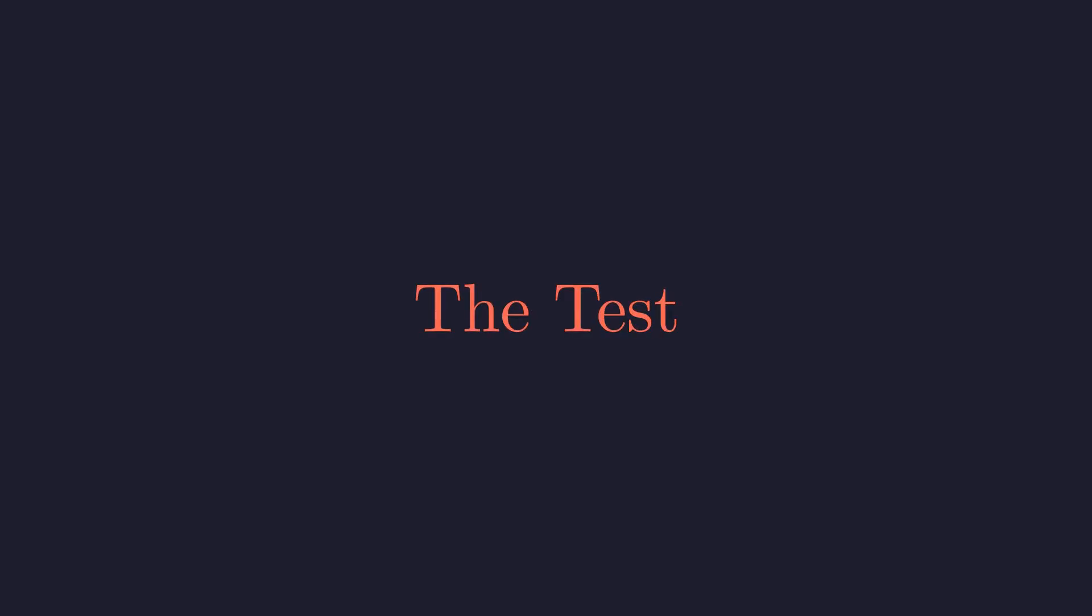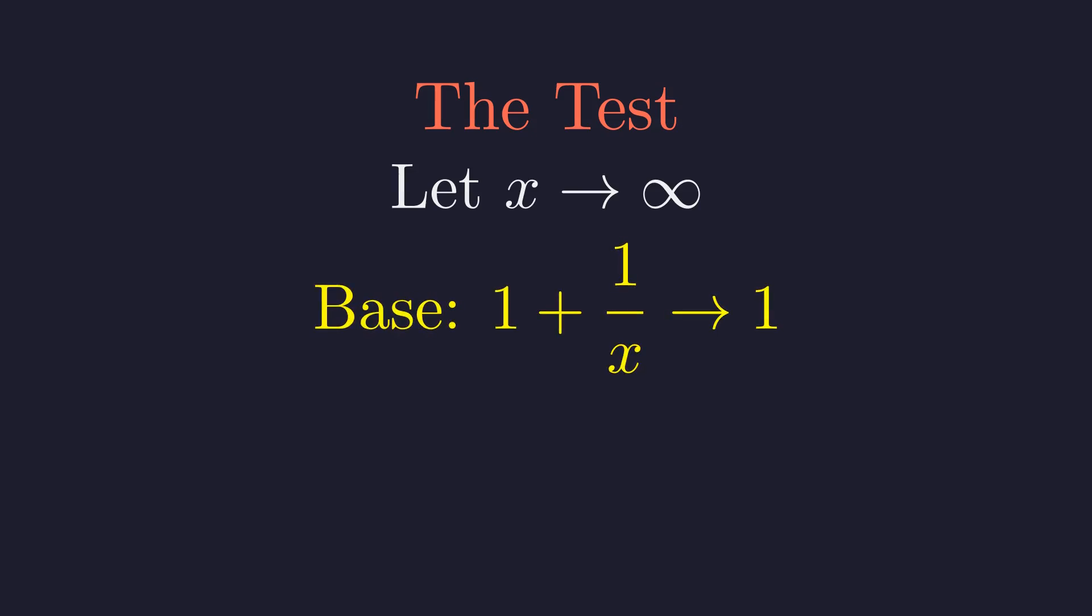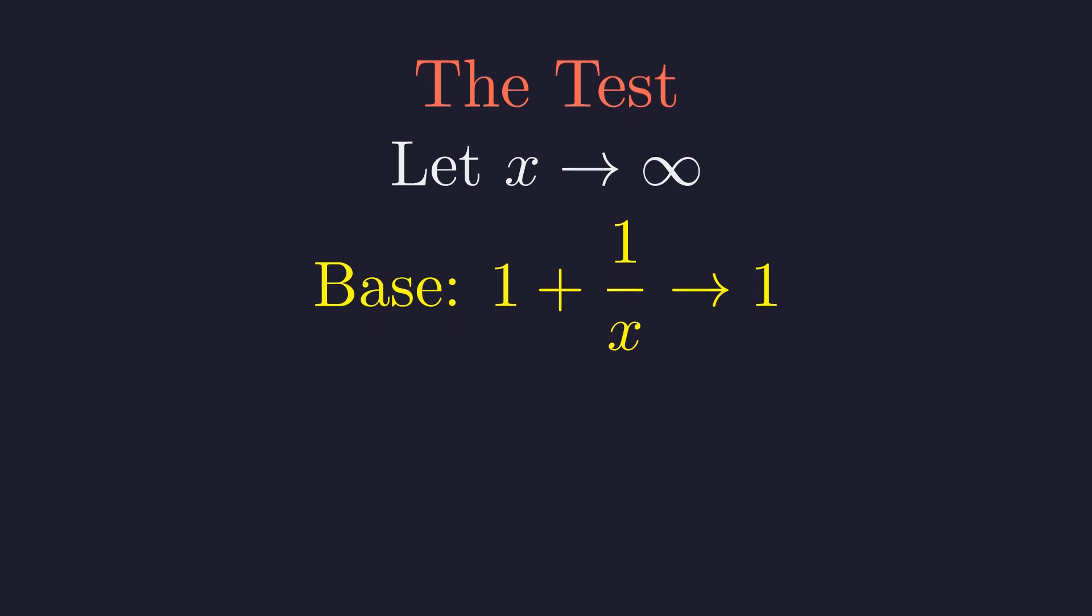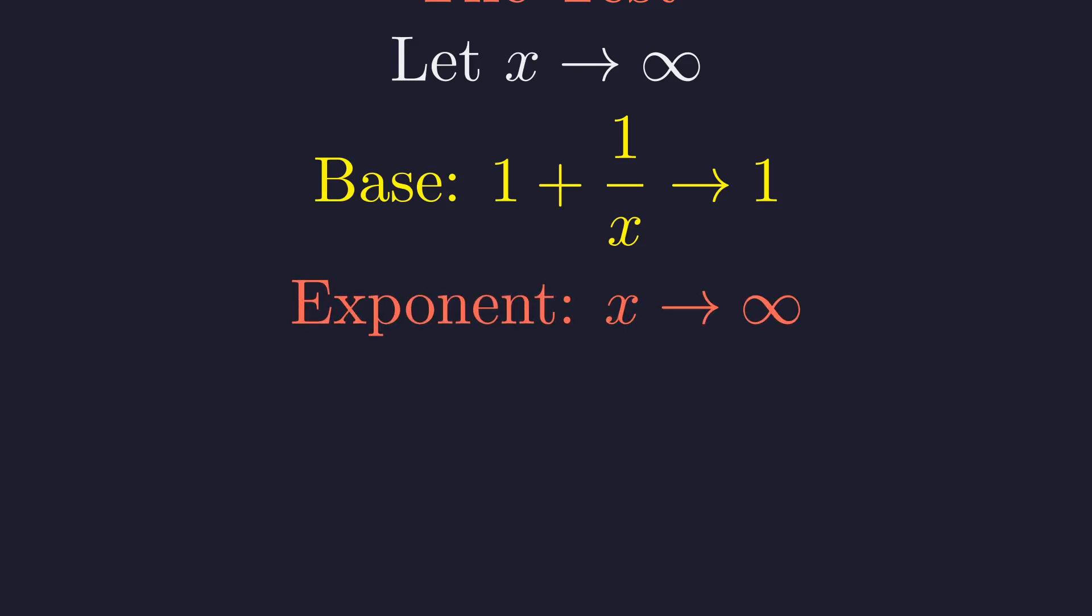So here's how we test our claim. We need a limit where the base approaches 1 and the exponent approaches infinity. We'll let x approach infinity. This is our variable that grows without bound. For the base, we use 1 plus 1 over x. As x grows, 1 over x shrinks to 0, so the base approaches 1. For the exponent, we simply use x itself, which goes to infinity.